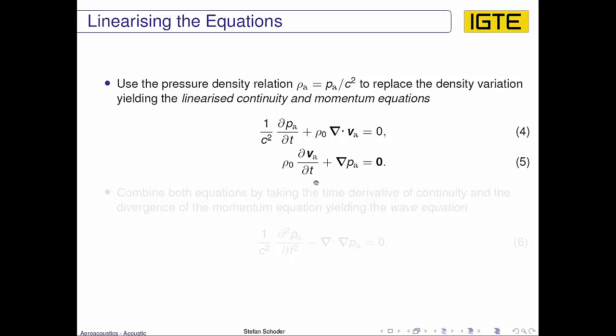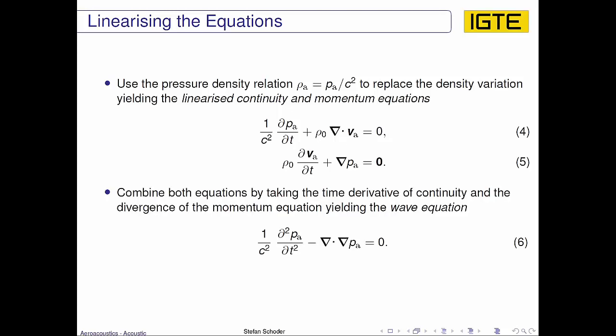And if we combine now these two equations then we arrive at the wave equation. So we compute the time derivative of the first equation, the divergence of the second equation, and we insert the two equations into each other. And then we arrive at the homogeneous wave equation down here in terms of the pressure.